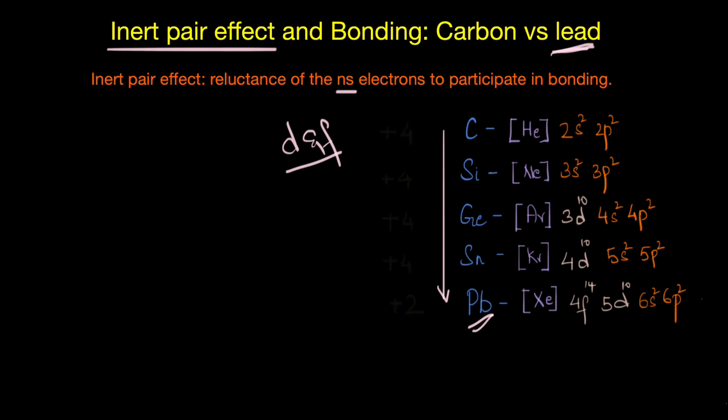Inert pair effect also describes why lead is more stable in the +2 oxidation state whereas all of the other group 14 elements are more stable in the group oxidation state which is +4.